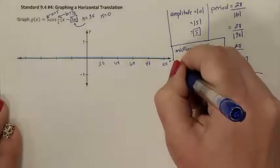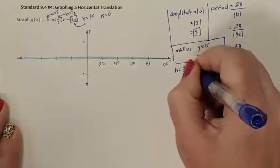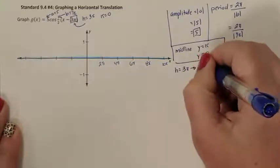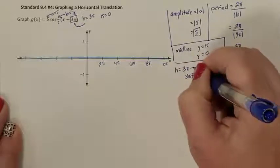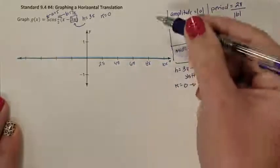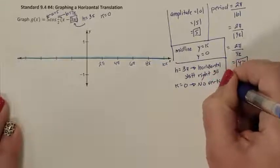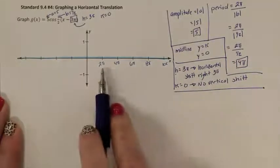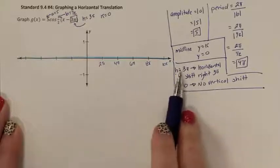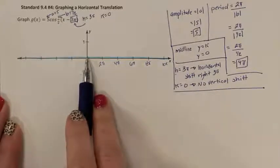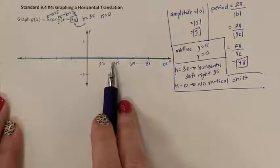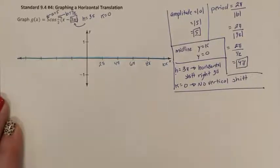Let's look at our h. Our h is 3 pi. H tells us how much to move left and right, so I have a horizontal shift to the right by 3 pi. My k is zero, so there is no vertical shift. This horizontal shift means what used to be at zero is now not starting until 3 pi. From 3 pi, I then need to count a full period of 4 pi.